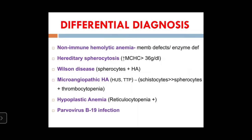Differential diagnoses of AIHA include: non-immune hemolytic anemia such as membrane defects; hereditary spherocytosis (differentiated by very high MCHC >36 g/dL); Wilson's disease (spherocytosis with hemolytic picture); microangiopathic hemolytic anemia (increased schistocytes, thrombocytopenia); hypoplastic anemia if reticulocytopenia is present; and parvovirus B19 infection.